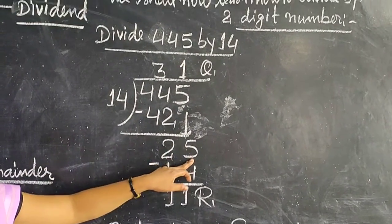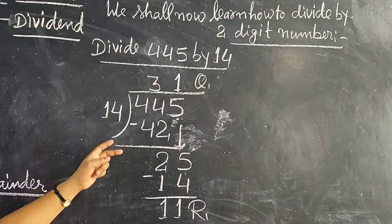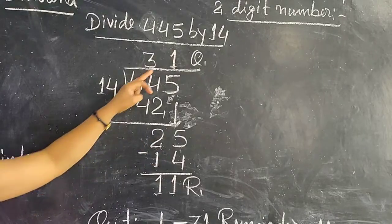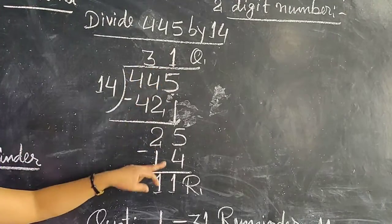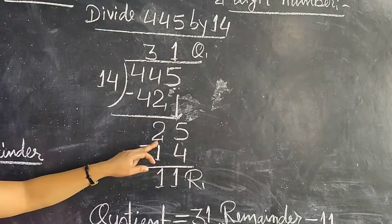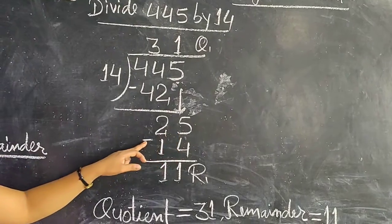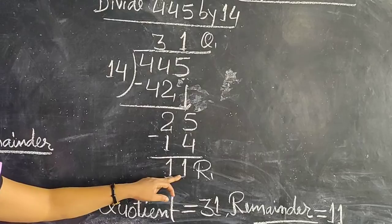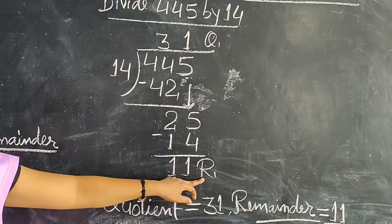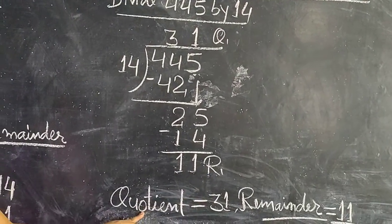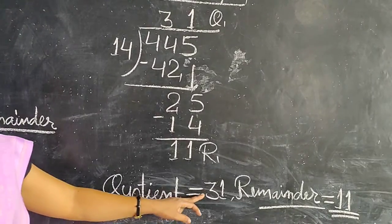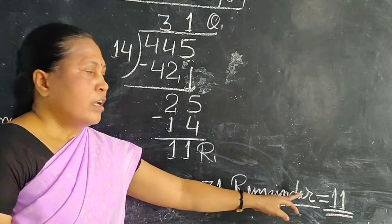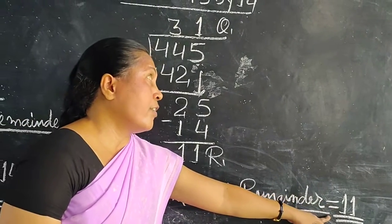Twenty-five. We divide twenty-five by fourteen. Fourteen minus — so, twenty-five minus fourteen. So, quotient equals thirty-one, and remainder equals eleven.